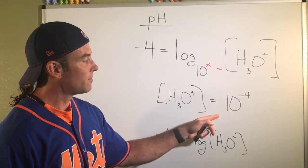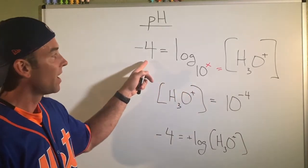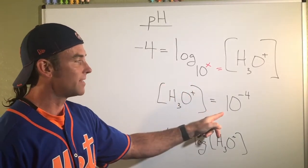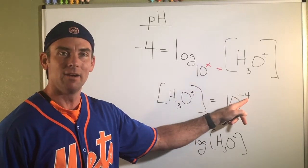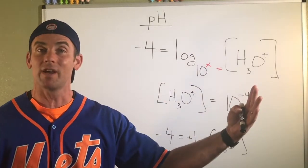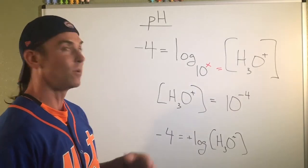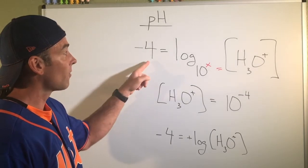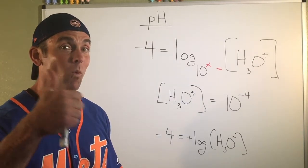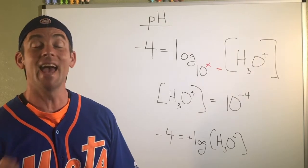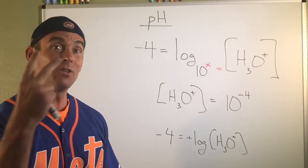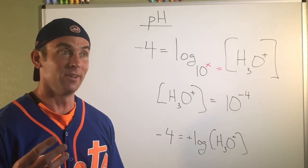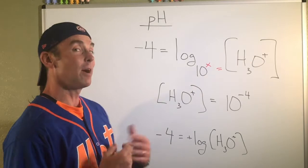But one of the things you'll notice about any time that we use a logarithmic system, every time that number changes, you're actually talking about a 10 times change in concentration. And I'm going to show you the pH range in just a second. We'll talk about different household things. But the important thing to recognize is if you change a pH by one unit, you're talking about a 10 times concentration change. Two units is a hundred times concentration change. Three units, a thousand times.